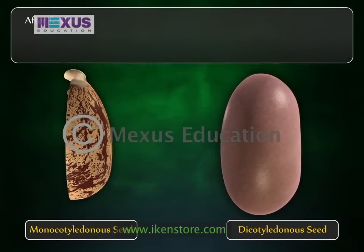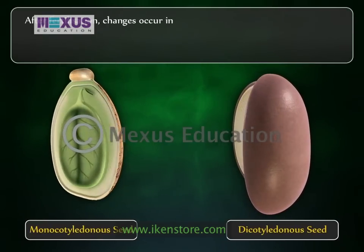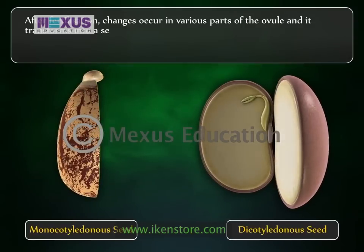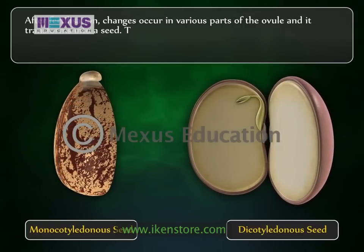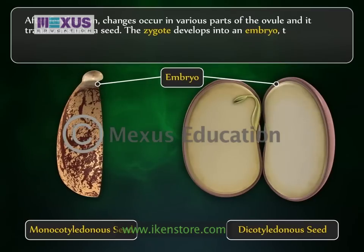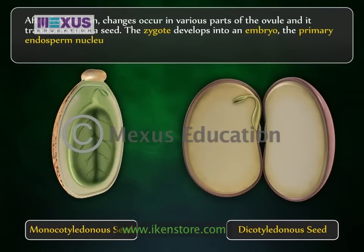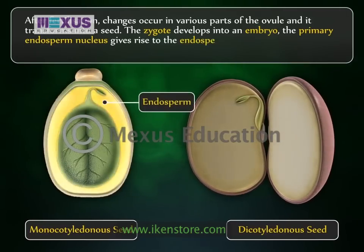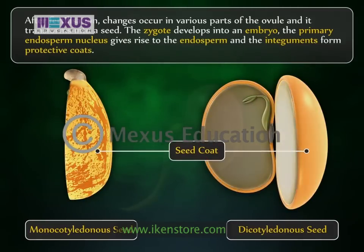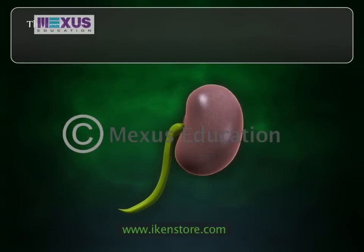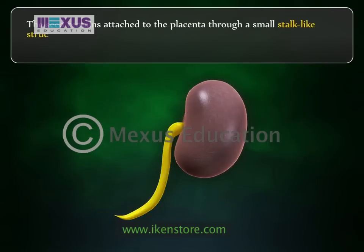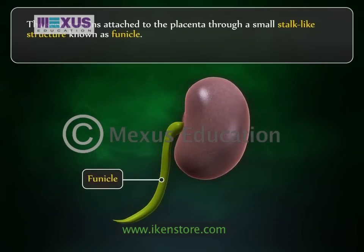After fertilization, changes occur in various parts of the ovule and it transforms into a seed. The zygote develops into an embryo, the primary endosperm nucleus gives rise to the endosperm, and the integuments form protective coats. The seed remains attached to the placenta through a small stalk-like structure known as the funicle.